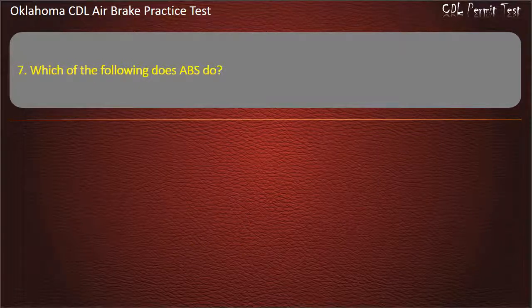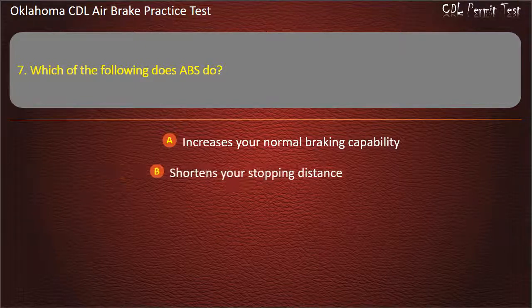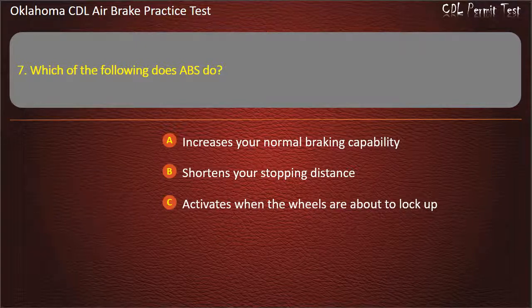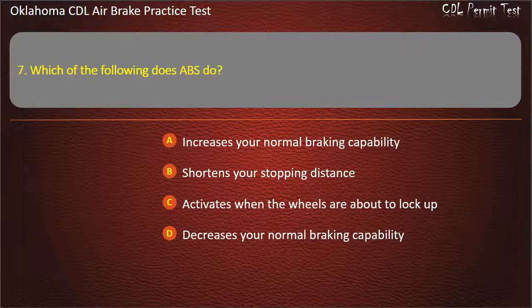Question 7. Which of the following does ABS do? Increases your normal braking capability; shortens your stopping distance; activates when the wheels are about to lock up; or decreases your normal braking capability. Answer: Activates when the wheels are about to lock up.